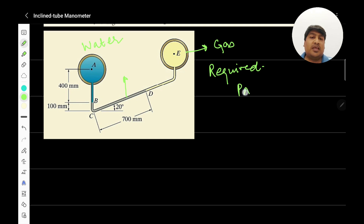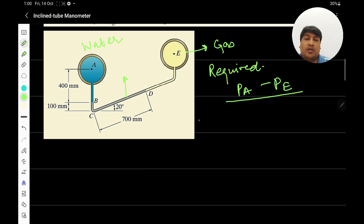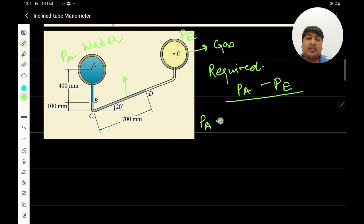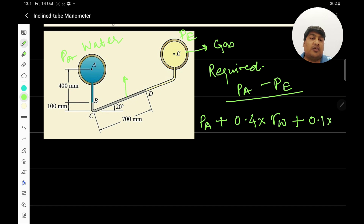The required quantity is p_a minus p_e. Starting at location A with pressure p_a, as we move downward from A to B there is an increase in gauge pressure equivalent to the height of 400 mm, that is 0.4 m, multiplied by the specific weight of water, gamma_w. Moving from location B to C, pressure increases again by 0.1 m multiplied by gamma_hg, the specific weight of mercury.